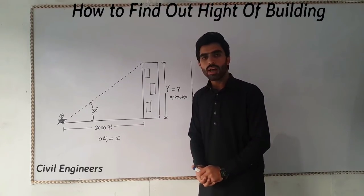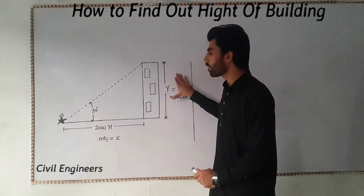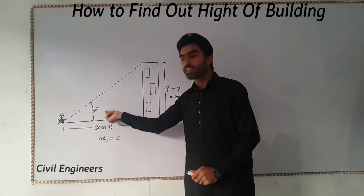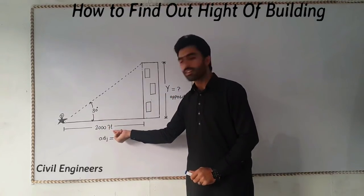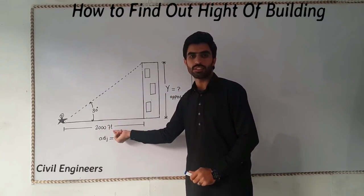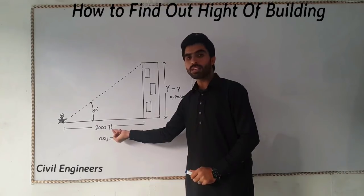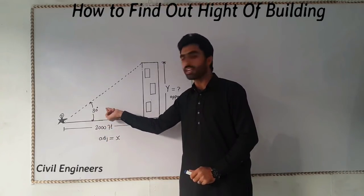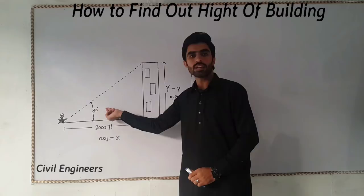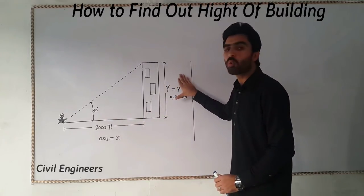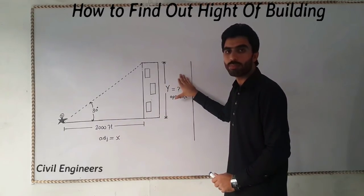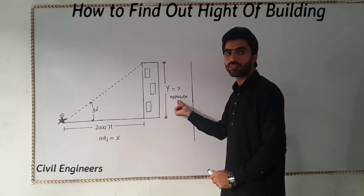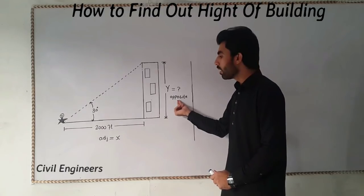In this video I'm going to show you how you can find out the height of a building if you have the angle and the hypotenuse length. I have a baseline that is 2,000 feet and the angle is 30 degrees, and I need the Y distance — meaning the height of the building, the opposite side.